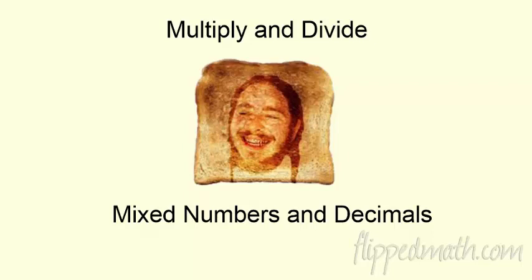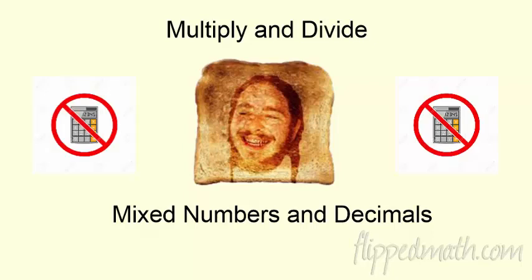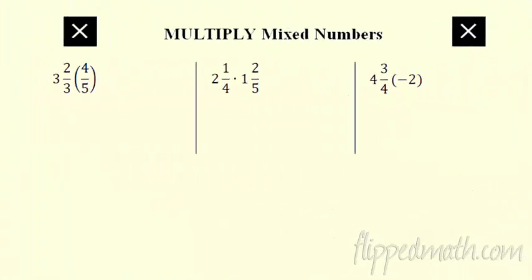All right, here we go. Let's take a look at the next section. We're going to multiply and divide again. This time we're doing mixed numbers and decimals. There's Toast to Malone rocking out in the middle. Awesome. Also remember, this is a no calculator zone. We're still in no calculator land crunching these numbers out. So let's get this rocking and rolling.